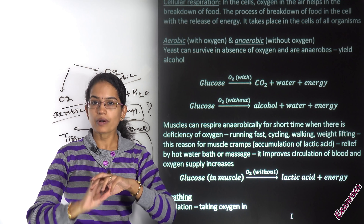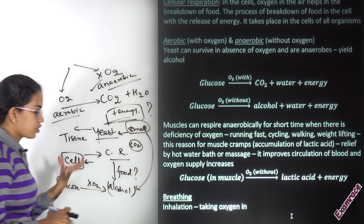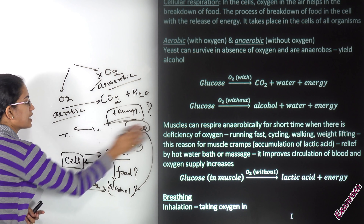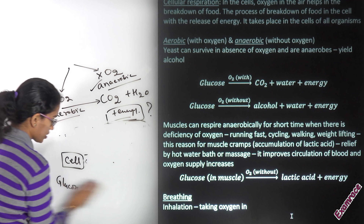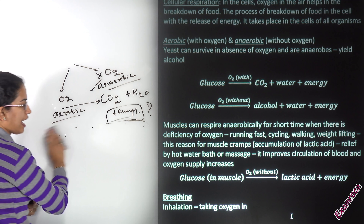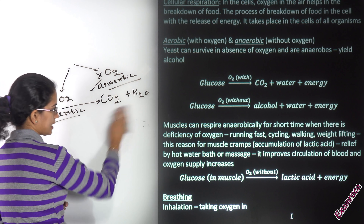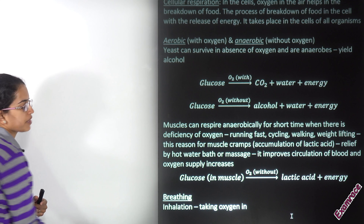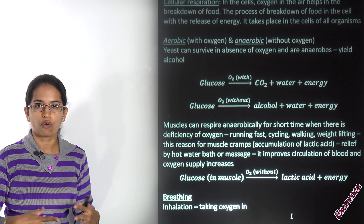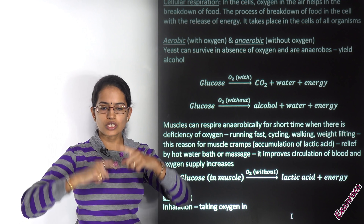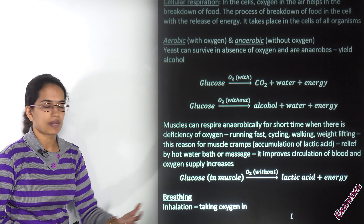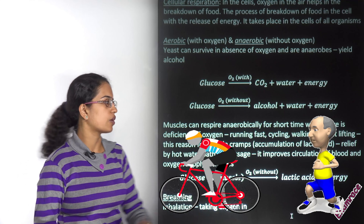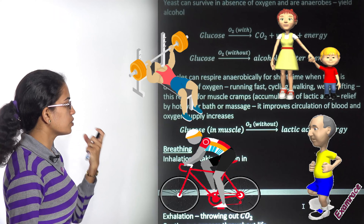Our muscles also respire. If you perform quick, high-energy labor, muscles work at a very fast rate, creating an oxygen deficiency. Because of this, glucose breaks down into lactic acid, which accumulates in the muscles and causes muscular cramps. A good way to treat muscular cramps is a hot water bath or massage, which improves blood circulation and increases oxygen supply. This can occur during running, cycling, or weightlifting.